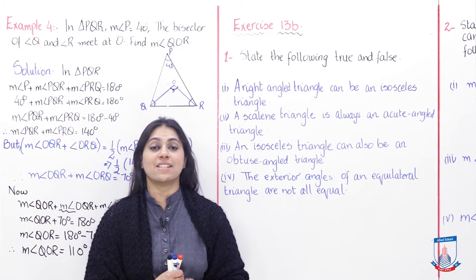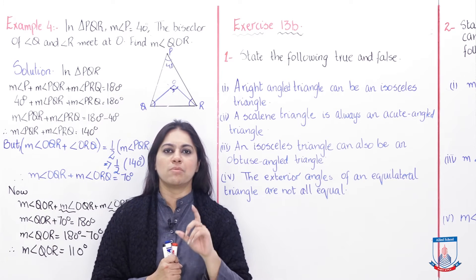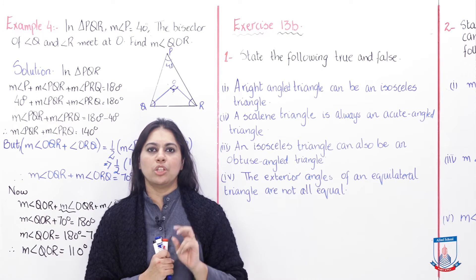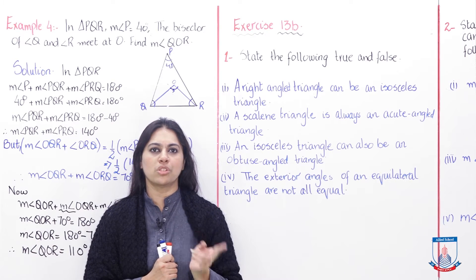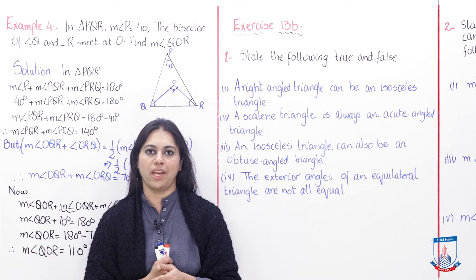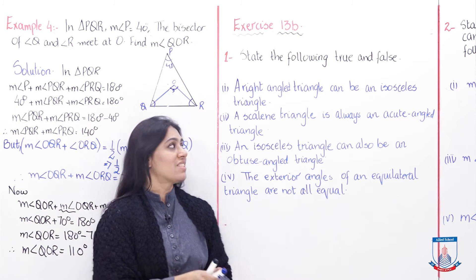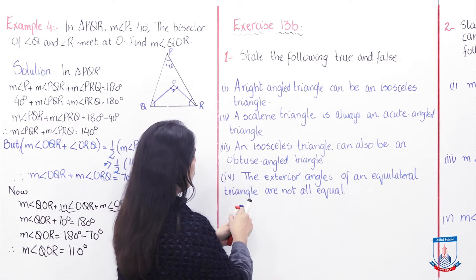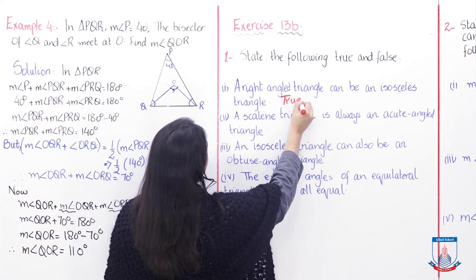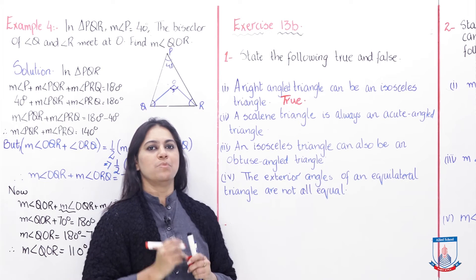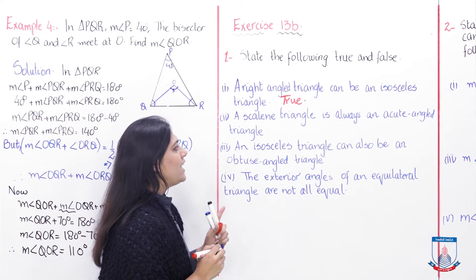Yes, it's the correct answer. If you recall, in your geometry box you have a set square. There are two set squares; one makes a 90-degree angle and its two opposite sides have angles of 45 and 45 degrees — that means it is an isosceles triangle. So this statement is TRUE.